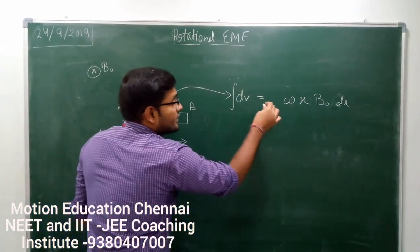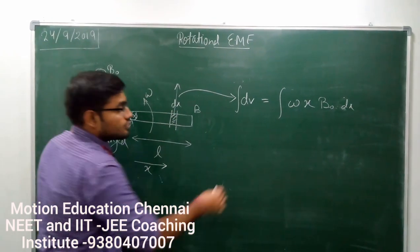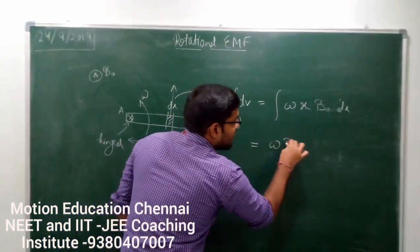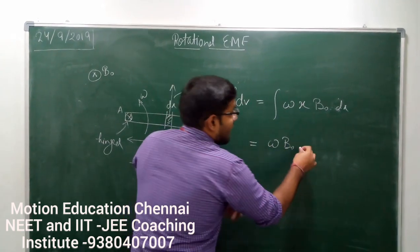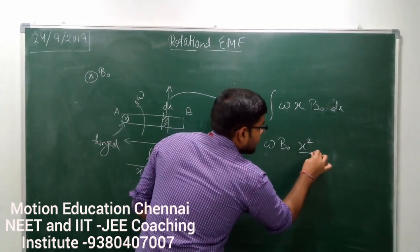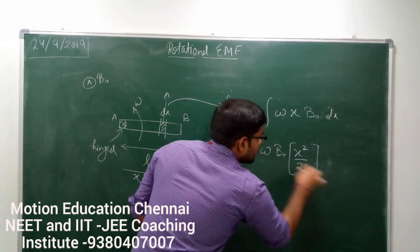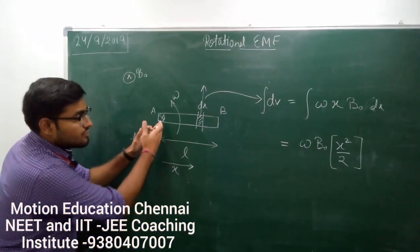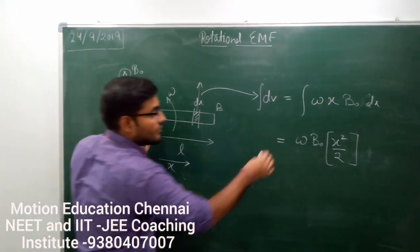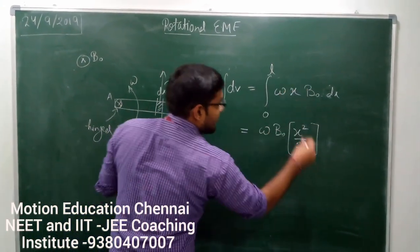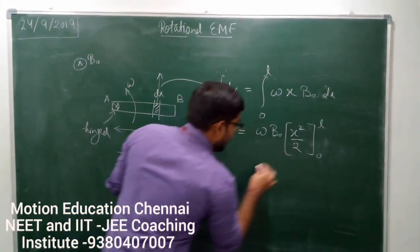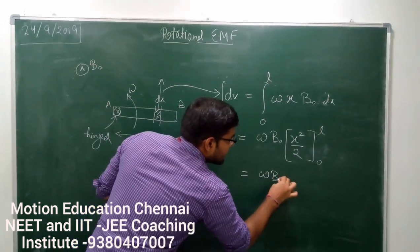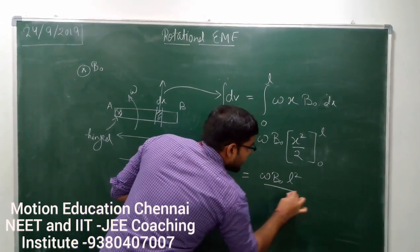Now what I need to do is integrate this. So if I integrate, omega and B₀ are constants, I get x²/2. The limit for x will be from 0 to L. If I put the limit from 0 to L, my answer comes out to be omega·B₀·L²/2.